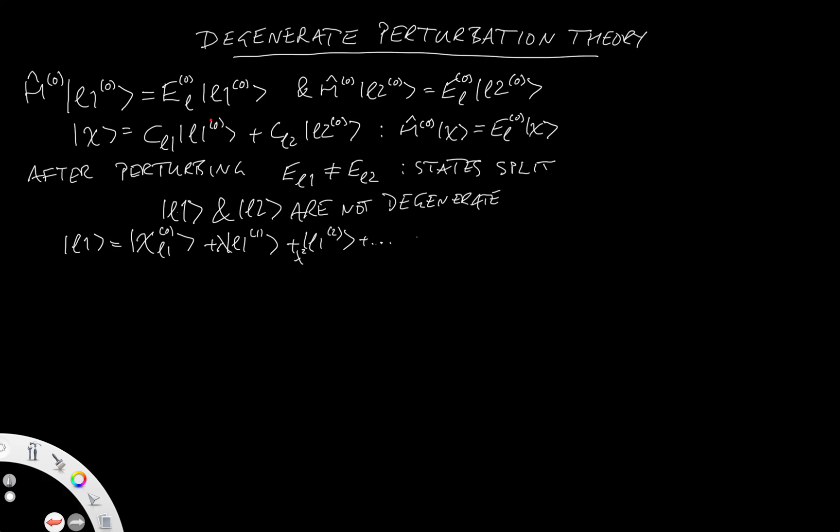And the same with L2. So we would have that L2 is going to equal chi_L2 of 0 plus, and I'll put the lambdas in properly this time, lambda L2 of 1. Let's make that a proper bracket. There we go, proper ket there. And then we're going to have a plus lambda squared L2 of 2 plus dot, dot, dot.